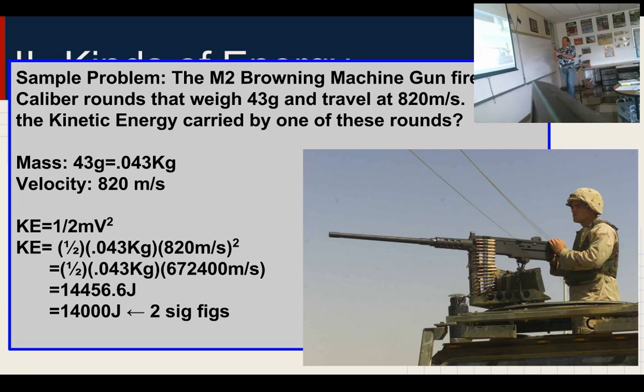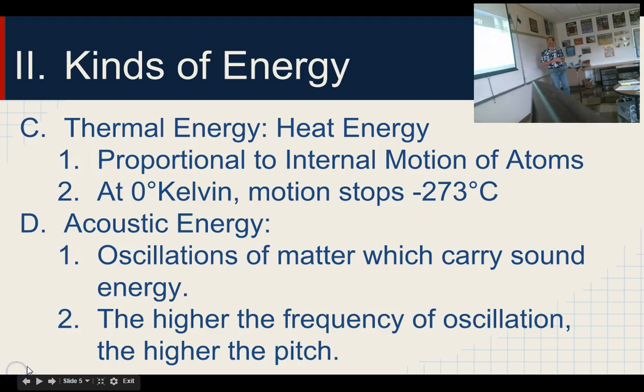So, again, mass times velocity. Sorry, one-half mass times velocity squared. You guys understand that idea? How much energy does a moving object have? Cool.